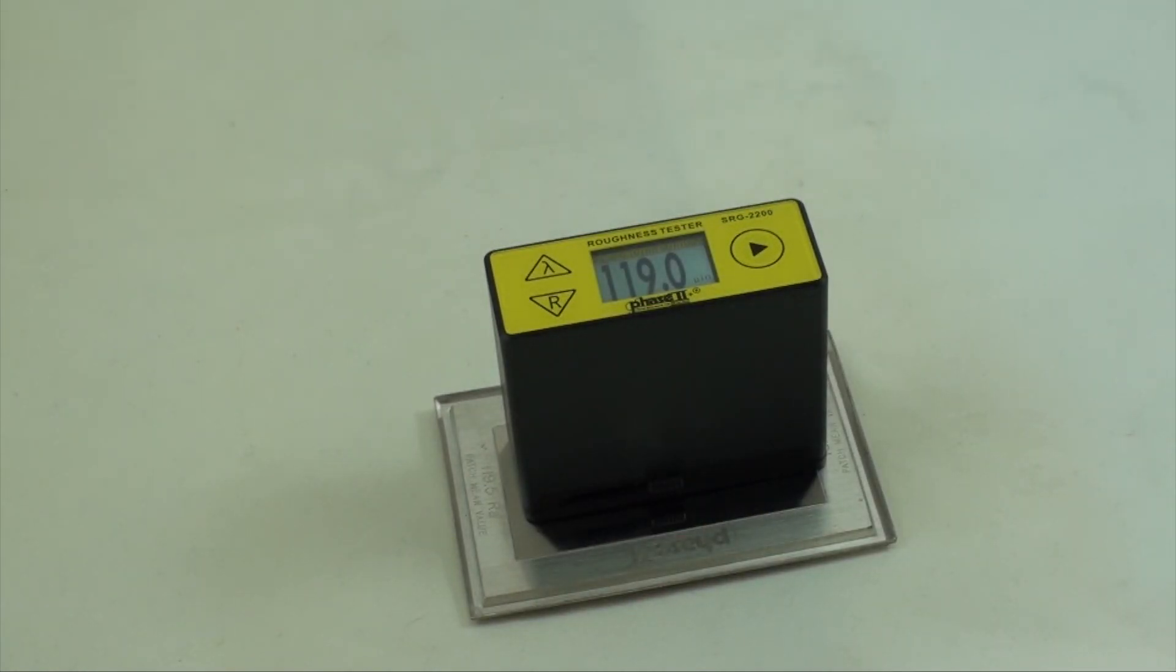The correct setting for your workpart can be found in a chart in the operation manual. The correct cutoff setting will be determined by the approximate surface roughness of the part. You can toggle between inch and metric measurement by holding the lambda button for two seconds.